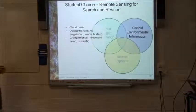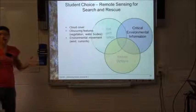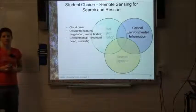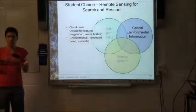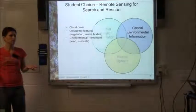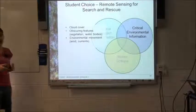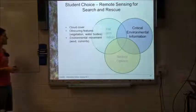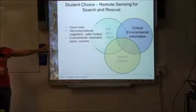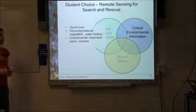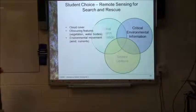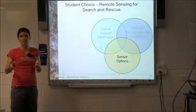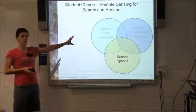The environmental information includes any considerations or impediments that might affect our ability to detect the subject. Cloud cover is critical — are we actually going to be able to use satellite, or is it totally cloudy in the area? Other obscuring features matter too: if the plane has gone down in water, the water itself will obscure our view unless debris is floating on the surface. Or has it gone down in vegetation? And is the plane still in one piece or broken up into bits? That's part of our critical subject information because it affects the object's size.